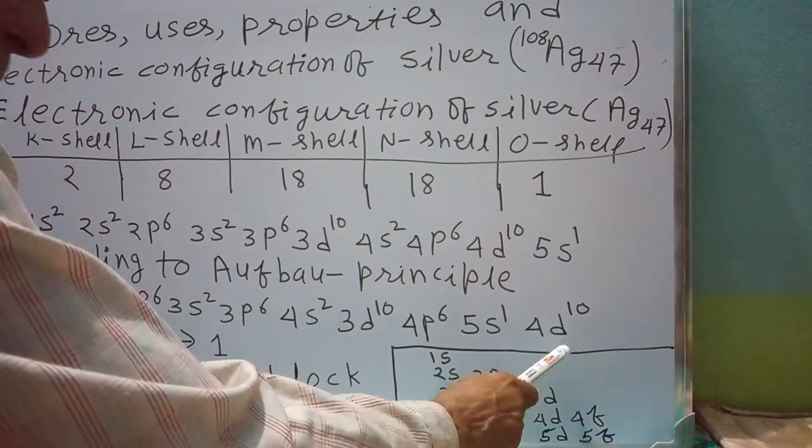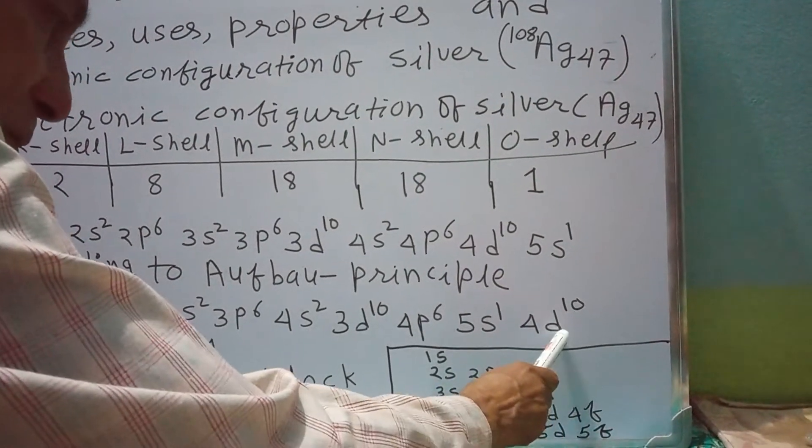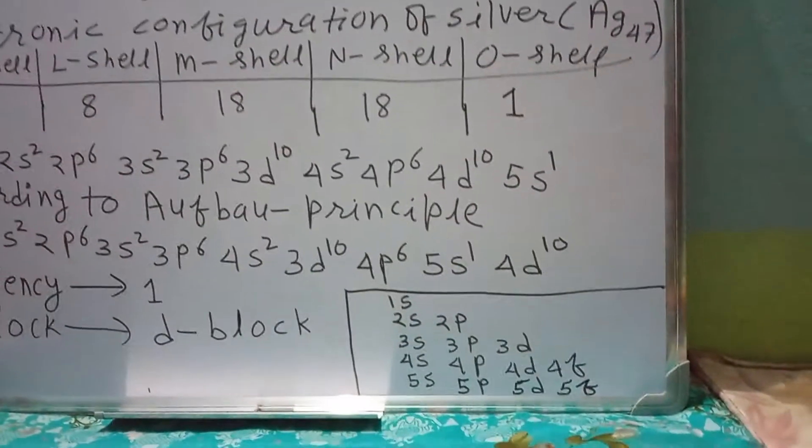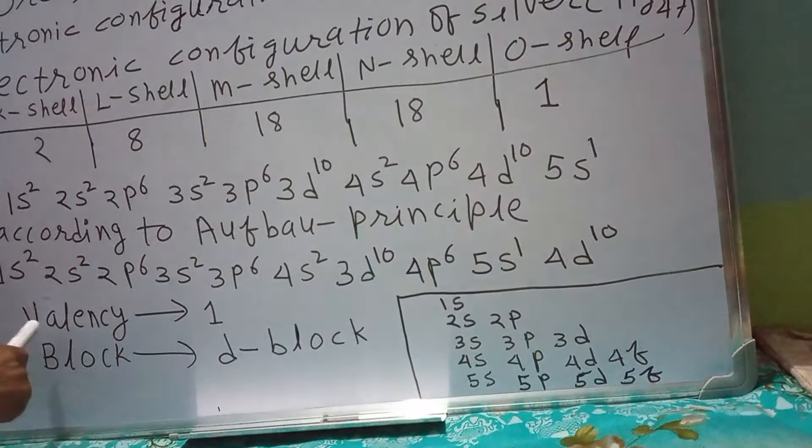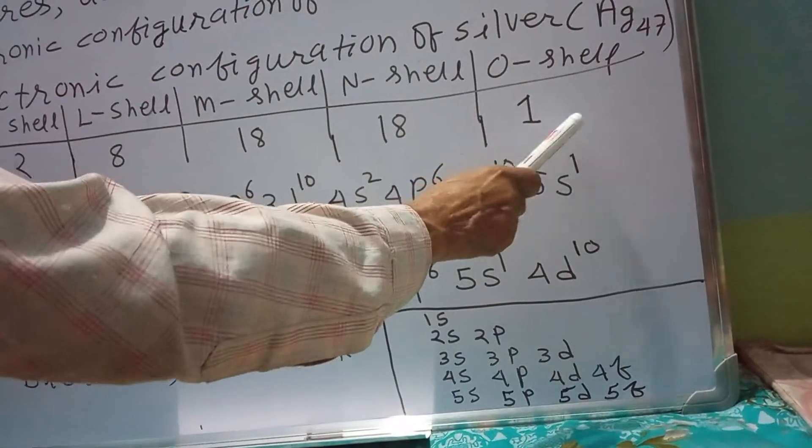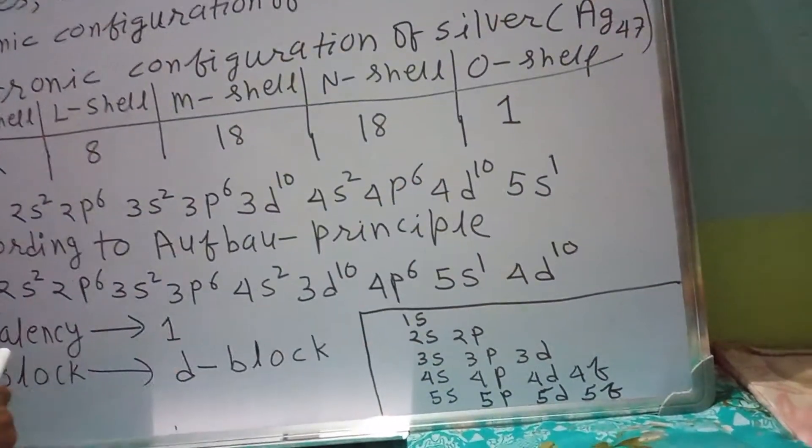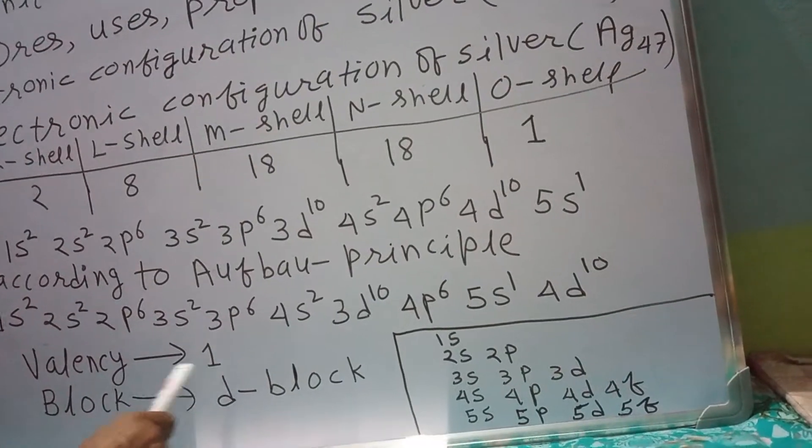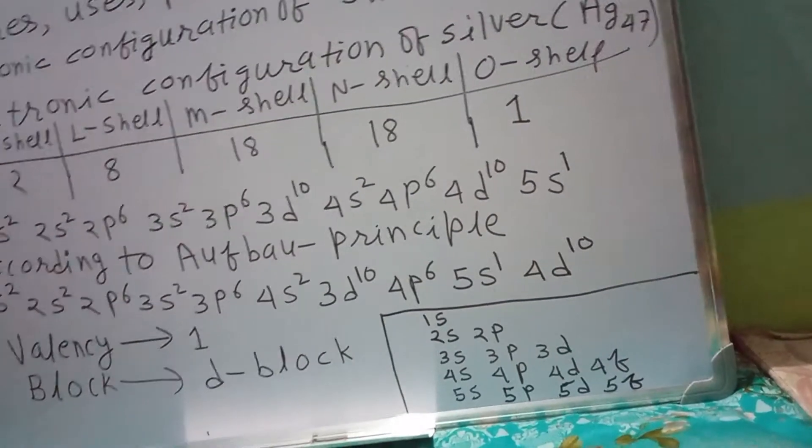The last electron just enters the d-block, so block is d-block. There is one electron in the last orbit, so the valency is 1. Silver valency is 1.